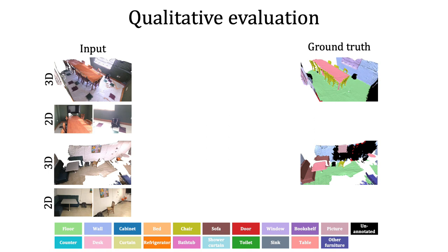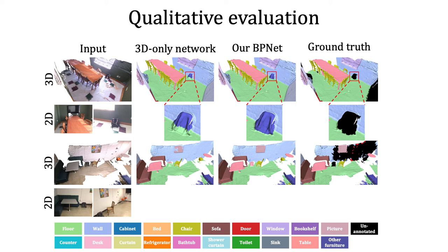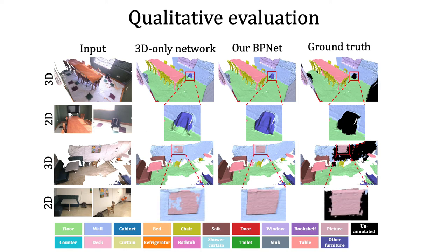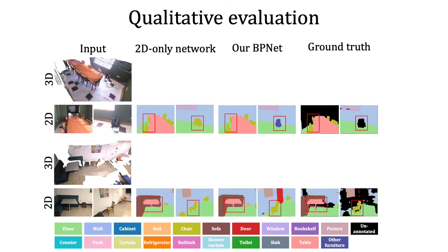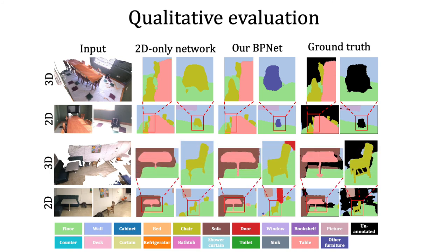Let's qualitatively evaluate our method against the 3D-only and 2D-only baseline networks. As shown in the close-up figures, our BPNet can better segment the boundary between the backpack and the floor, as well as the boundary between the picture and the wall, thanks to the bidirectional projection module that integrates high-quality textures from 2D images. Our BPNet also distinguishes backpack from the floor correctly and segments sharp boundaries for the chair and table, because of the underlying geometric clues provided by 3D features.